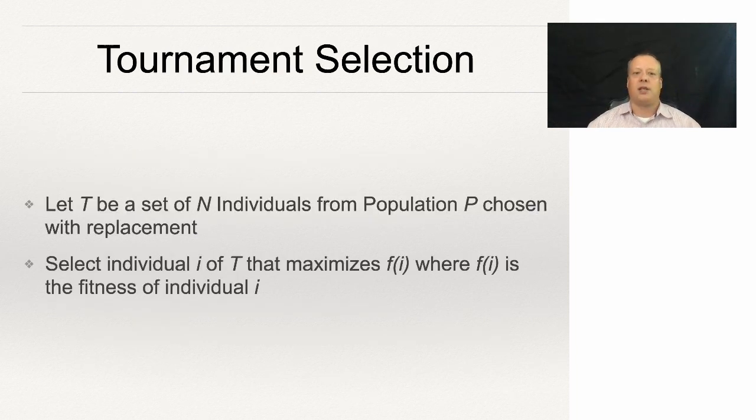Tournament selection, as I mentioned: let T be a set of individuals from population P chosen with replacement. Select the individual i of T that maximizes f(i), where f(i) is the fitness of the individual.